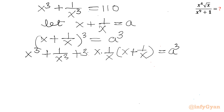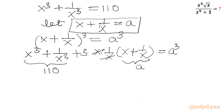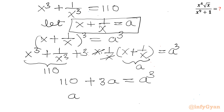Now x³ plus 1 over x³ equals 110. The 3 times x times 1/x terms cancel, leaving 3a from the substitution. So I can write 110 plus 3a equals a³, or equivalently a³ minus 3a minus 110 equals 0.